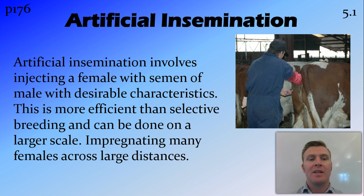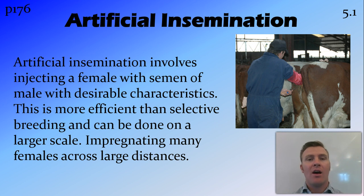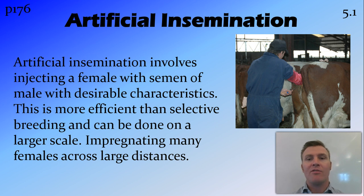A more efficient way of doing this is through artificial insemination. This involves getting the sperm or semen from a male that has desirable characteristics and putting that semen into a female that also has desirable characteristics. The good thing about this is that you don't have to have the two organisms together. For example, you can collect semen from a bull with lots of desirable characteristics and send it all around the country to cows. In the old days, you had to actually get that bull and put it in the paddock with a cow and wait, so artificial insemination is a huge leap forward in reproductive technologies.